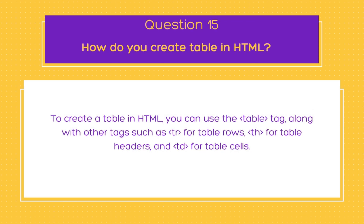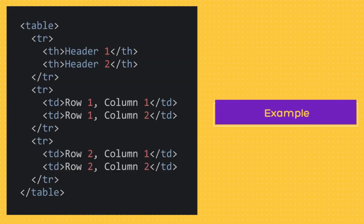Moving on: how do you create a table in HTML? To create a table, you use the table tag along with other tags such as tr for table rows, th for table headers, and td for table cells. Here's an example code snippet that creates a basic table with two rows and two columns. The table tag defines the start of the table, each row is defined using the tr tag, and within each row you define header cells using the th tag and regular cells using the td tag.